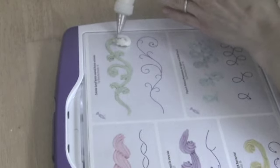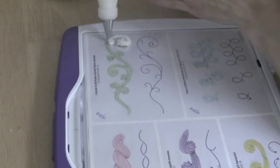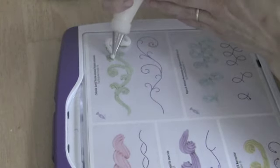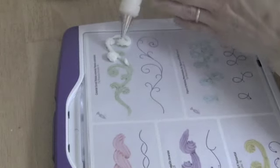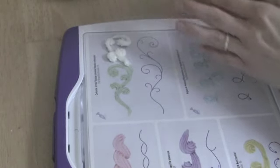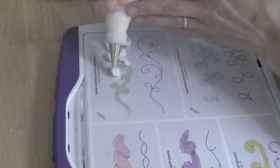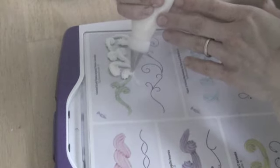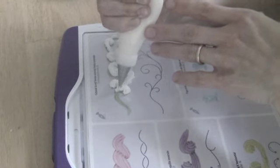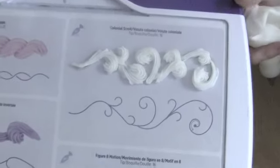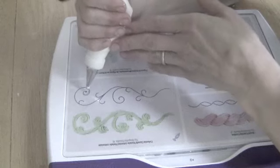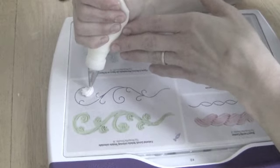For the colonial scrolls we're also going to be using a tip number 16, and this is going to be similar to the C motion technique and also kind of a combination of the figure 8 motion scrolls. Instead of doing one big center vine and then having these other ones branch off of it, we're going to pipe them in a succession of C motion scrolls.